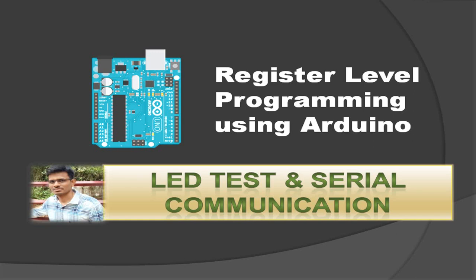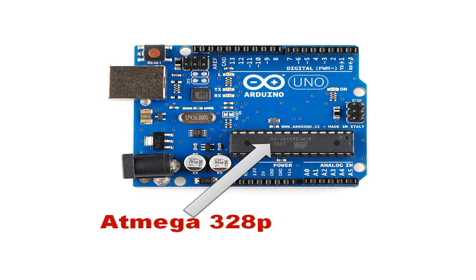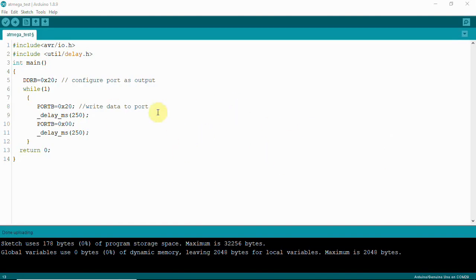Hi everyone, this is Ajay. In this video we are going to see register level programming using Arduino. We know that Arduino Uno has an ATmega328 controller on the board, so we are going to use that controller and use the datasheet to write register level coding to perform some operations.